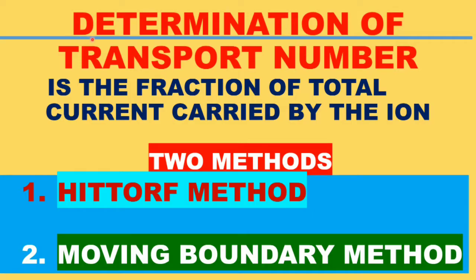Today we will see the determination of transport number, also called transference number or Hittorf number. It is defined as the fraction of total current carried by the cation or anion, and is represented by T+ or T−. There are two methods for the determination of transport number: the Hittorf method and the moving boundary method.